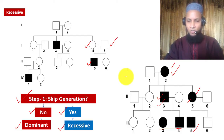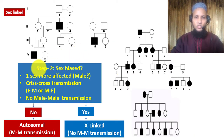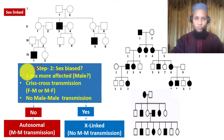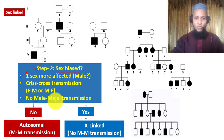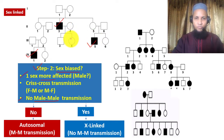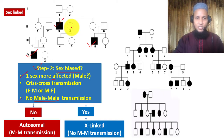In the next step, we identify whether it is X-linked or autosomal. To decide this, we look for sex biasness. Sex biasness may have several features. For example, if only males are affected and there is no male-to-male transmission, it goes in favor of X-linked disease. We can use 'sex-linked' and 'X-linked' interchangeably, since practically there is no Y-linked disease.